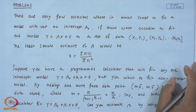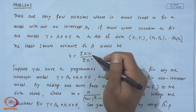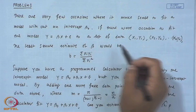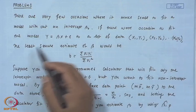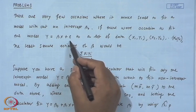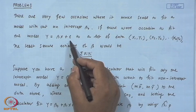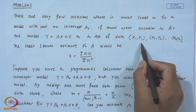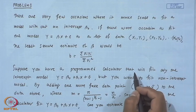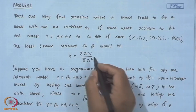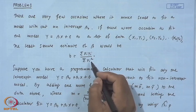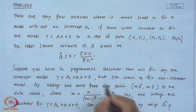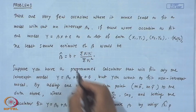There are very few occasions where it makes sense to fit a model without an intercept β₀. If there were occasion to fit the model Y = βX + ε to a set of data (x₁, y₁), (x₂, y₂), ..., (xₙ, yₙ), then the least square estimate of β would be given. We will check what is the least square estimate for β̂ for a model without any intercept β₀.